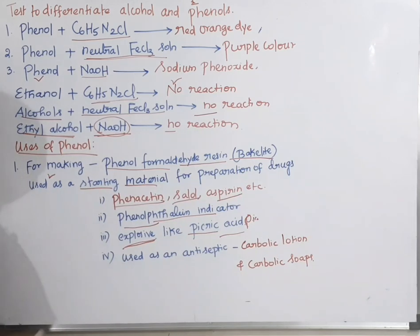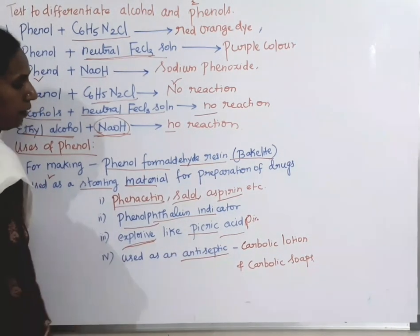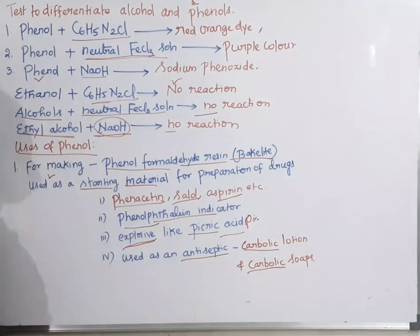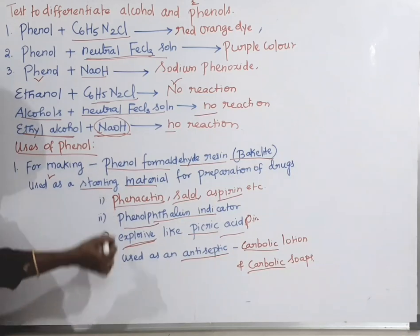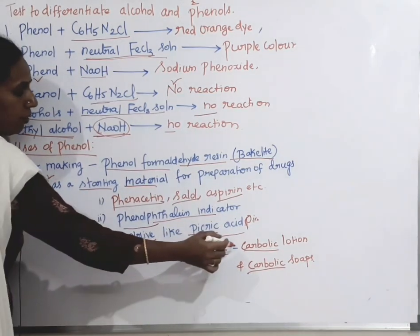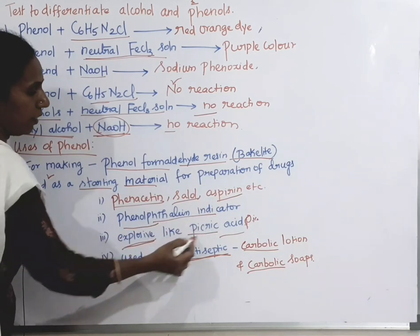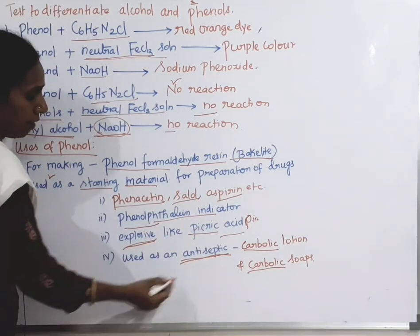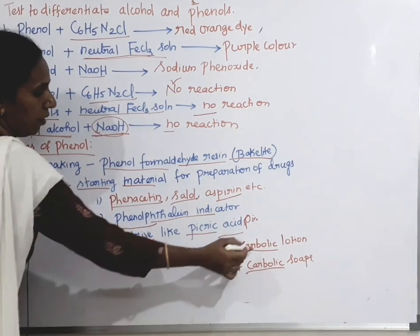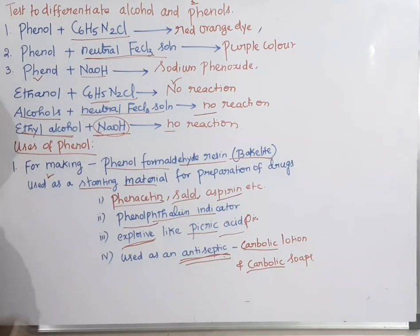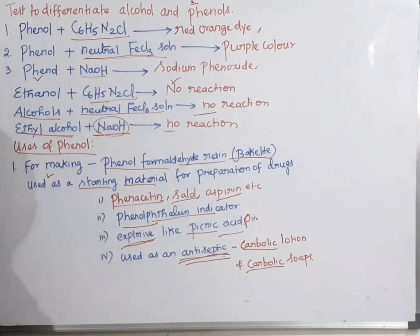Phenol is also used as an antiseptic — for example, carbolic lotion and carbolic soaps. So the uses of phenol include: making phenolphthalein indicator, explosives like picric acid, antiseptics such as carbolic lotion and carbolic soaps, due to its disinfectant nature.